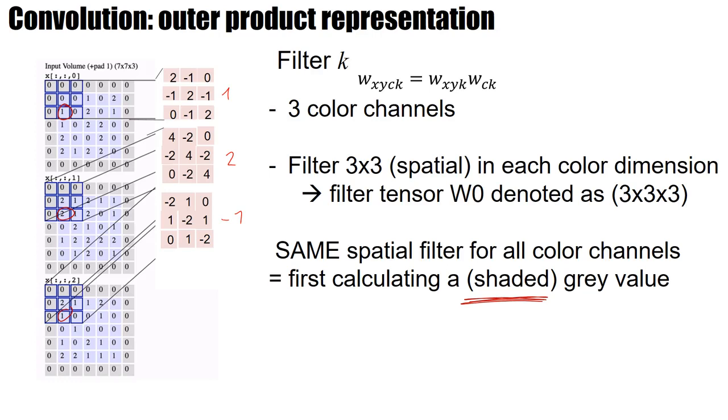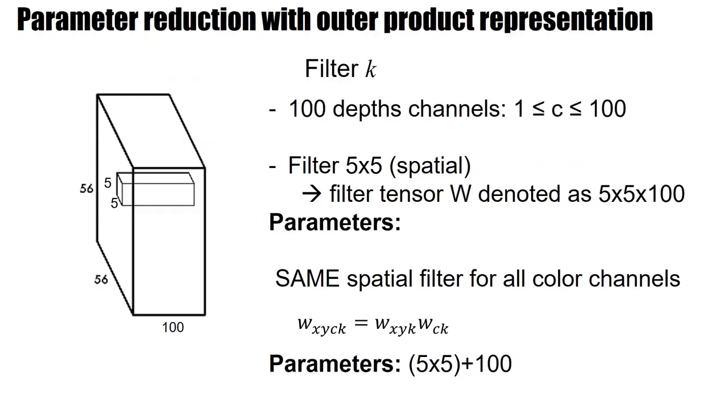And of course, this not only works for color. We can think of an arbitrary channel with depth 100. So this is the volume that needs to be picked up by a filter. I use a 5x5 filter in the spatial dimensions.